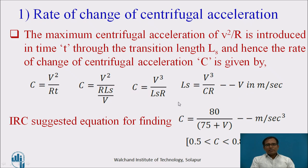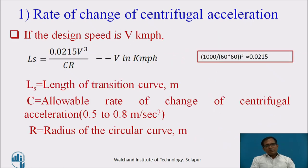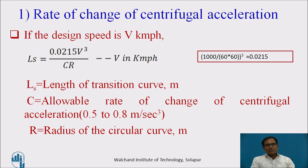IRC suggests finding the c value using c = 80 / (75 + v), where v is in kmph, and this value is in m/s³. The suggested value of c ranges from a minimum of 0.5 to a maximum of 0.8 m/s³. To convert the equation for v in kmph, multiplying by 1000 and dividing by 3600, the final equation becomes L_s = 0.0215 v³ / (C·R), where c is 0.5 to 0.8 m/s³, R is the radius in meters, and L_s is the length of transition in meters.